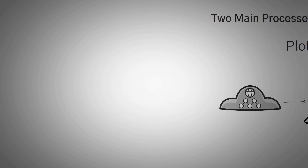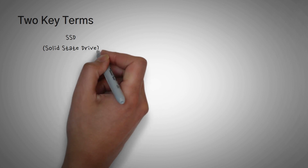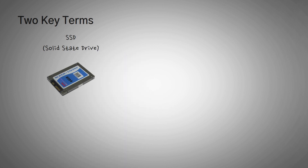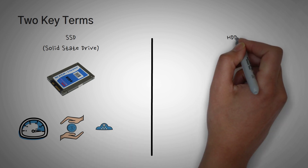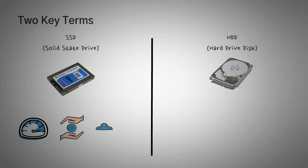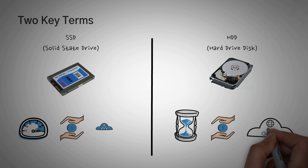Before we continue, you need to know two key terms. SSD, which stands for Solid State Drive, is a form of storage device that can read and write very quickly. It is one of the fastest, affordable ways to read and write data, although there is a limit to these devices until they no longer work. The second term is HDD, which stands for Hard Drive Disk. This is a form of storage device that can read and write quite slowly, but is reliable, affordable, and has been used for years. You can store a lot more data on an HDD than on an SSD for the same price.